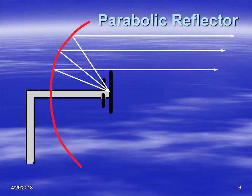Here we see the parabolic reflector and the antenna. What happens is the antenna — the thing that transmits the signal — is actually sending the signal backwards into the dish, or into the reflector. The reflector then focuses the signal and sends it out in a very narrow beam in a particular direction.